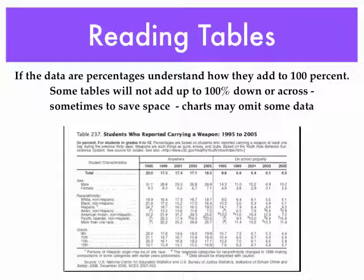If the data are percentages, you need to understand how they can add up to 100%. Some tables will not add up to 100% down or across — sometimes researchers do this to save space and some charts may omit some data. Make sure when you're submitting assignments for me, yours need to add up to 100% unless you have something really rare going on, but I'll assist you with that.